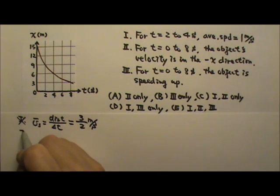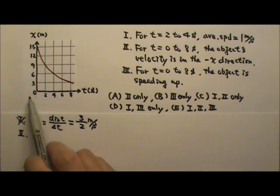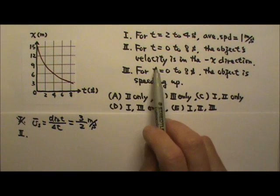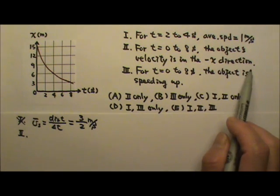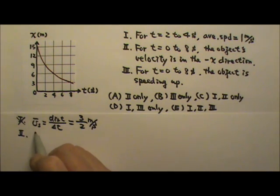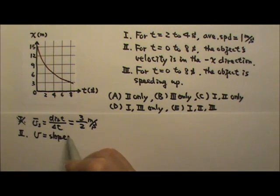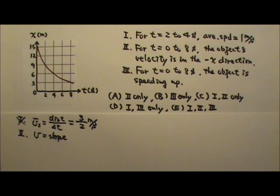Now let's see number 2. For t equals 0 to 8 seconds, the object's velocity is in the negative x direction. Now the velocity is the slope of the position versus time graph. The slope is negative. That means the velocity is negative. So number 2 is right.